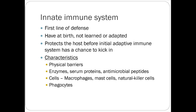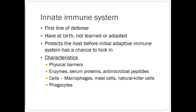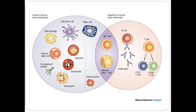Let's talk about immune system basics. The innate immune system — your first line of defense — you have it at birth. It's not learned or adapted. It protects the host before the adaptive immune system has a chance to kick in. T cells and B cells are usually the major targets of pharmacologic activity when we want to suppress the immune system.